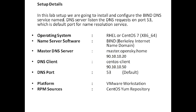To know the technical steps efficiently you need to know the setup details — please make sure you take note of these. The operating system we are using is CentOS 7. For the name service software we are using bind. The master DNS server hostname is master.opensky.com and its IP address is 90.10.10.20.